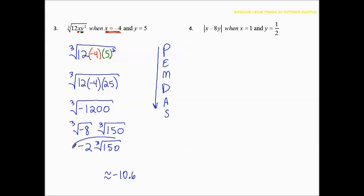So either this answer, a simplified radical, or this answer, the approximated decimal, are good answers, because they're both numbers and they equal the same thing.